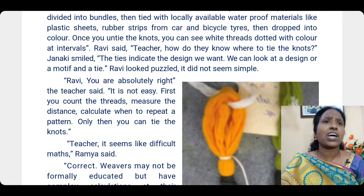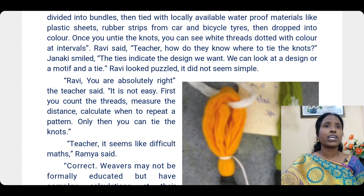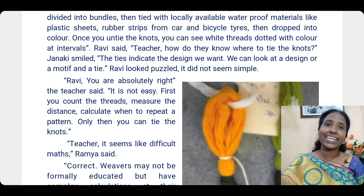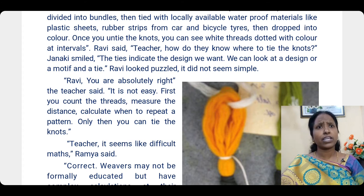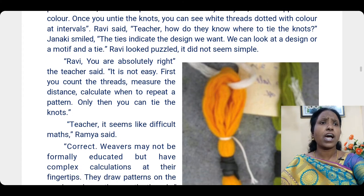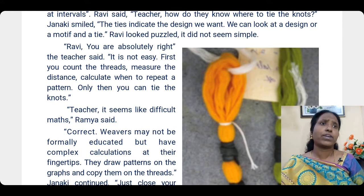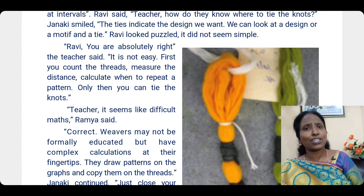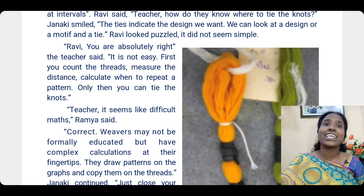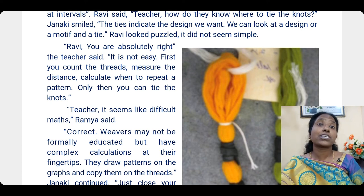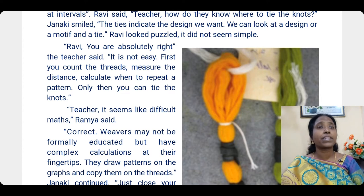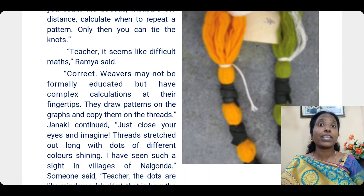Someone asked, 'Teacher, how do they know where to tie the knots?' Janaki smiled and said, 'The ties indicate the design we want.' Ravi looked puzzled — it did not seem simple. Then the teacher said, 'Ravi, you are absolutely right — it is not easy. First you count the threads, measure the distance, calculate when to repeat a pattern, only then you can tie the knots. It is very complicated and needs a lot of skill.'